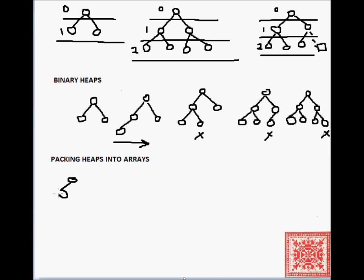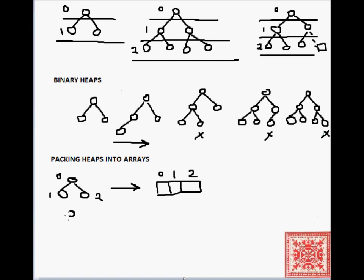Now, let's talk about how we can linearize a binary tree and pack it into an array, because heaps are typically implemented as binary trees. A complete binary tree can be packed into an array through a level-order traversal — essentially we go level by level and pack it in: zero, then one, two.